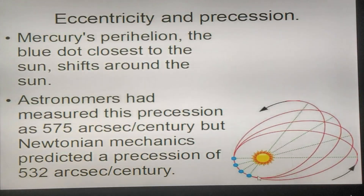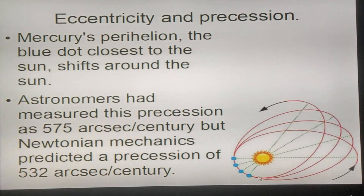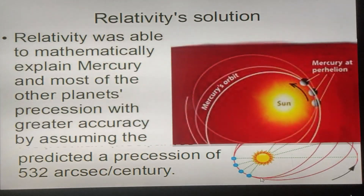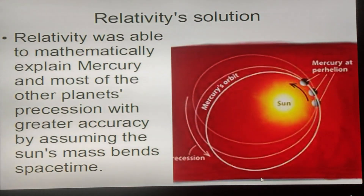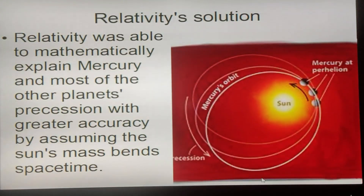Astronomers measured this precession at 575 arc seconds per century, but Newtonian mechanics predicted only 532 arc seconds per century. Relativity was able to mathematically explain Mercury's and most other planets' precession with greater accuracy by assuming the Sun's mass bends spacetime — whatever that means.